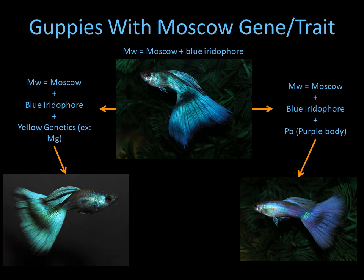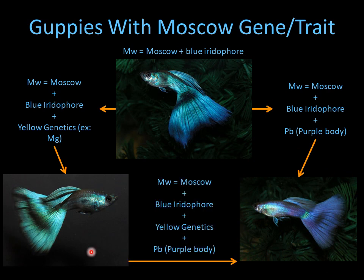If you cross a blue Moscow to a purple female that has the PB (purple body) trait, it will result in a purple Moscow. Also, if you take a green Moscow and cross it to a purple female you will also get a purple Moscow. Even with the yellow genetics in there you'll still get a purple. This particular male was produced by crossing a green Moscow to a female that had PB purple body, and you can tell it has some green just by looking at this area here.